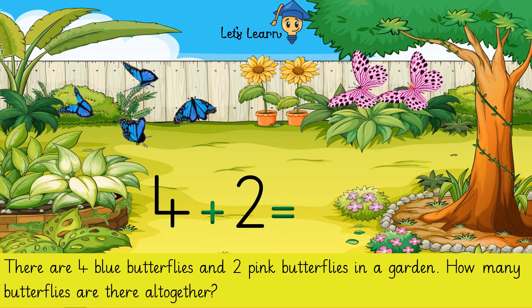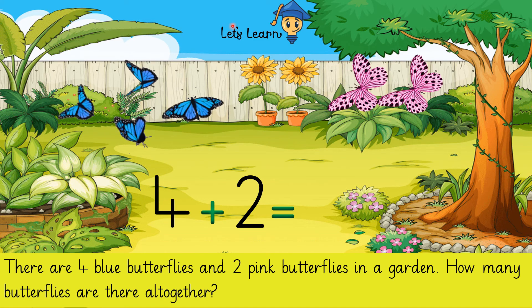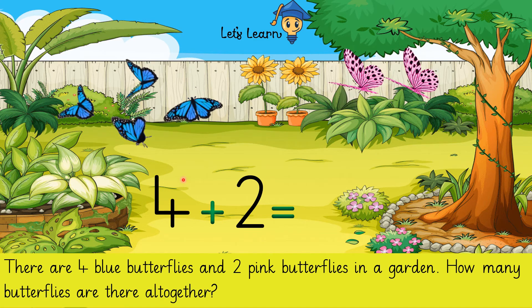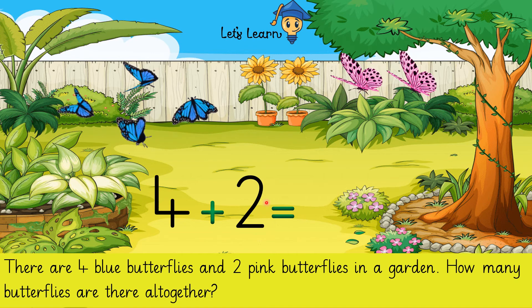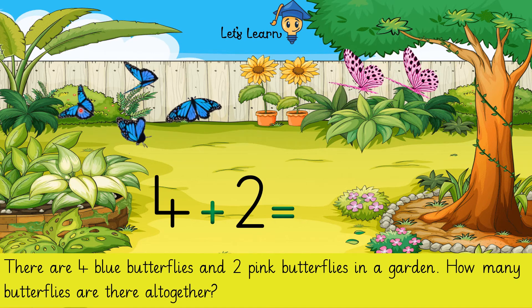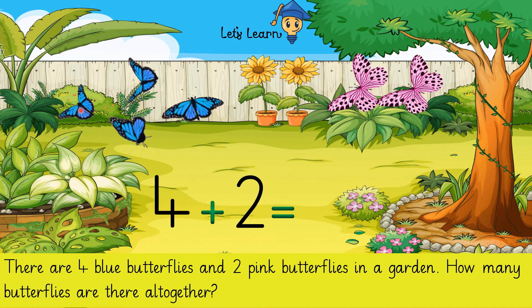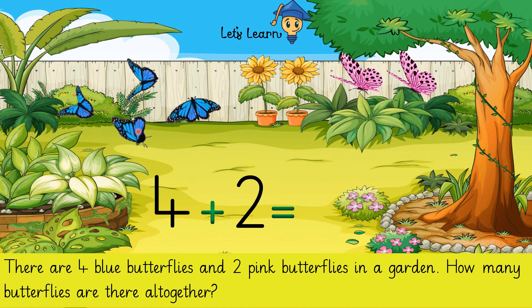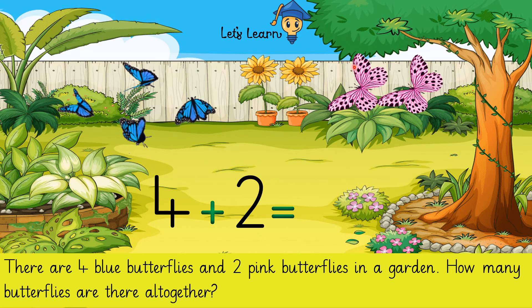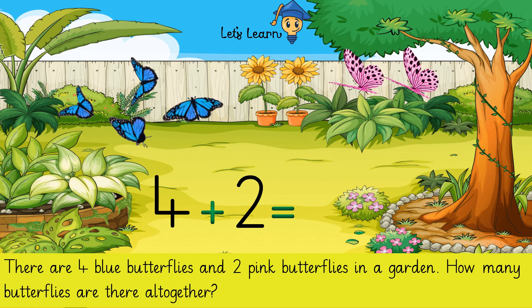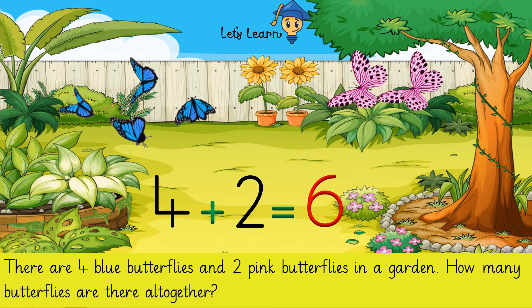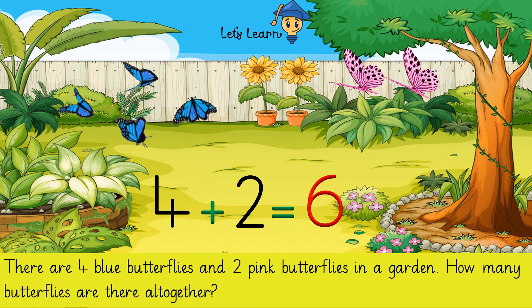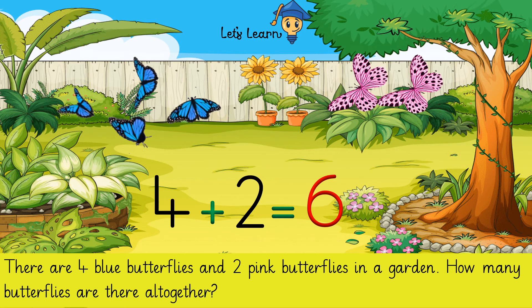Put an equals-to sign in the sum. Four plus two equals — let's count them all together: one, two, three, four, five, six. So there are six butterflies altogether.